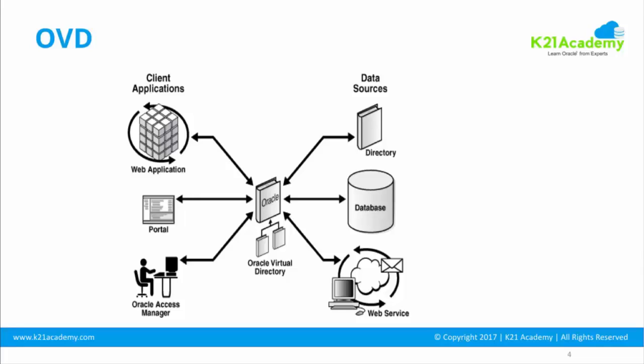Oracle Virtual Directory, or OVD, is a virtualization layer that sits in front of multiple LDAP servers or directory stores. For example, you may have users in a directory service, users in a database, and users accessible via a web service. Oracle Virtual Directory acts as a proxy layer with different adapters for each backend source, providing a single unified LDAP view to clients.